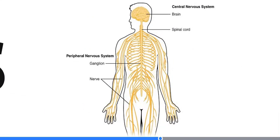Nervous tissue is different depending on where we look in the nervous system. There's the central nervous system — the brain and spinal cord — and the peripheral nervous system, which is everything else, made up of what are called ganglia and nerves. The types of glia in the central nervous system are specific to that region, and in the periphery there's a different set of glia. There's also a barrier separating the central nervous system from the rest of the body called the blood-brain barrier, so other tissues don't get into the brain in the same way as in the periphery.